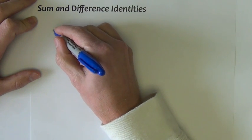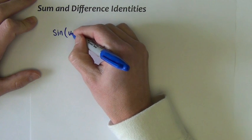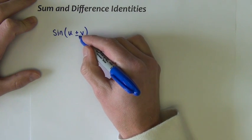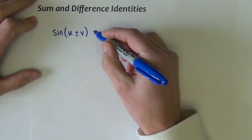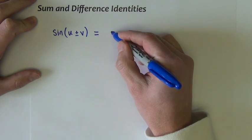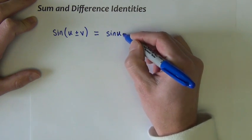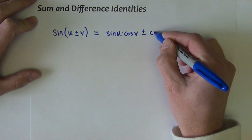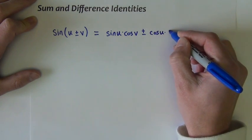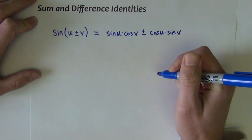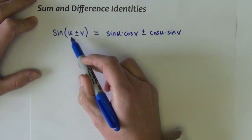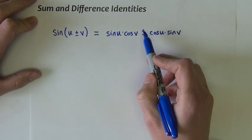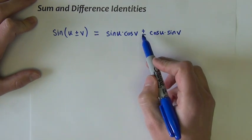The first one we'll build for sine. Sine of u plus or minus v. The u and v can be any variables you want them to be. Sine of u plus v is equivalent to sine of u times cosine of v plus or minus cosine u times sine v. I use the plus and minus signs so that I don't have to write the whole same thing out twice. If it's plus here, you use plus in the middle. If it's minus, you use minus here.